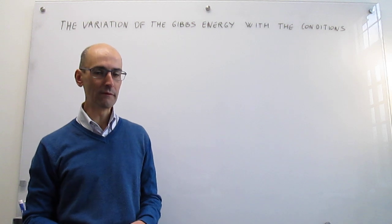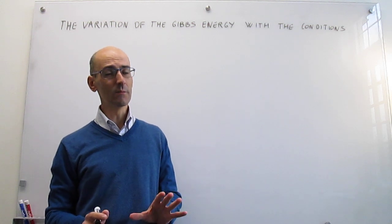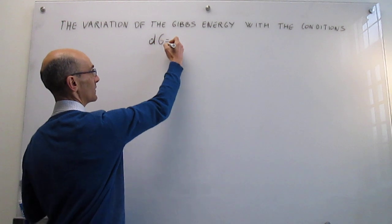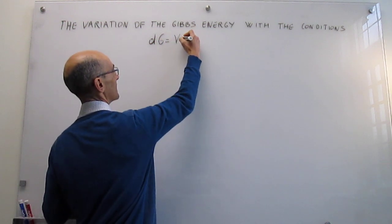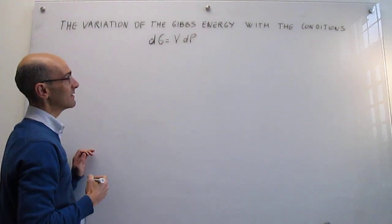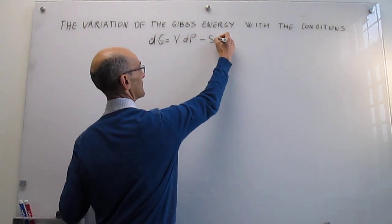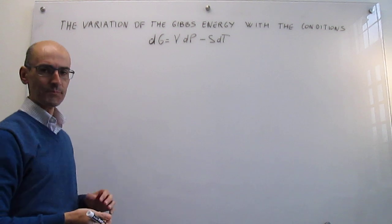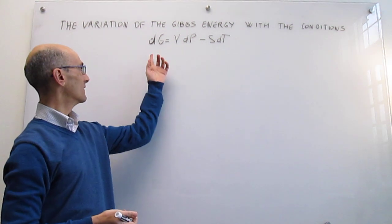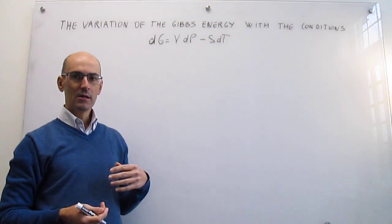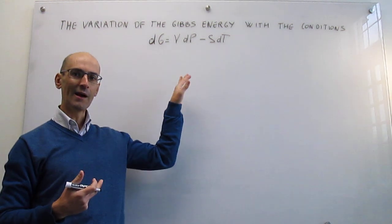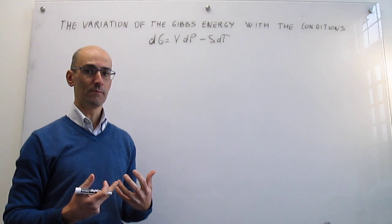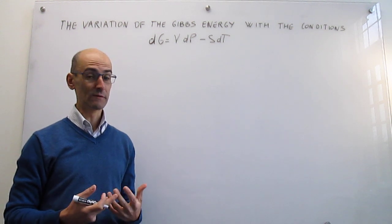We have seen a little bit how the Gibbs energy depends on conditions from the fundamental thermodynamic equation derived in a prior video, where we saw that the fundamental equation for the Gibbs energy is dG = VdP − SdT. This suggests that the Gibbs energy depends on pressure and temperature, and it is illustrative to go back and see how we derived this expression to reinforce that pressure and temperature are the natural variables for the Gibbs energy.